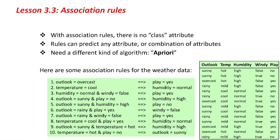Association rules are about finding associations between attributes — between any attributes. There's no particular class attribute. Rules can predict any attribute, or indeed any combination of attributes. For this we need a different kind of algorithm, the one that we use in Weka.